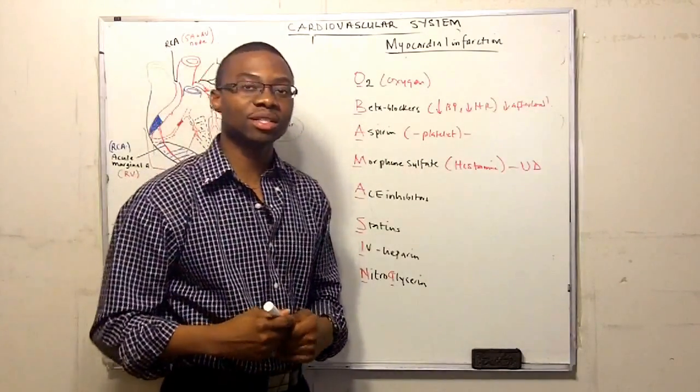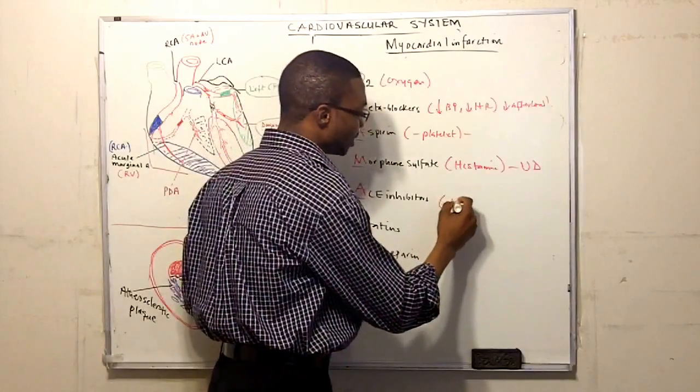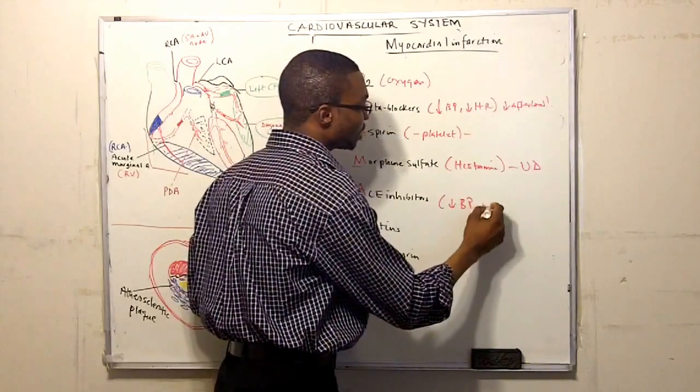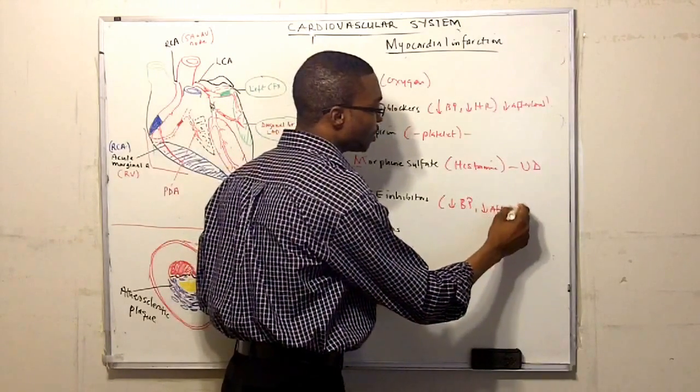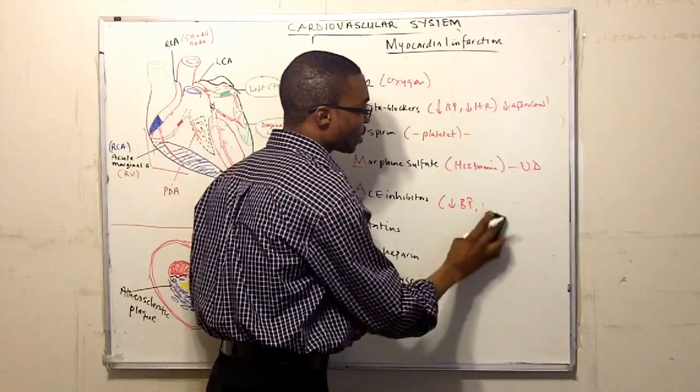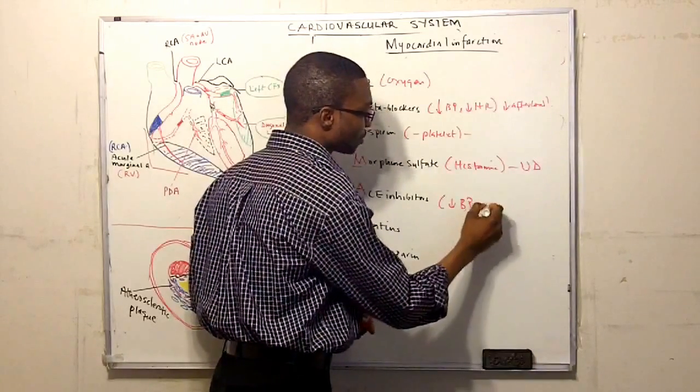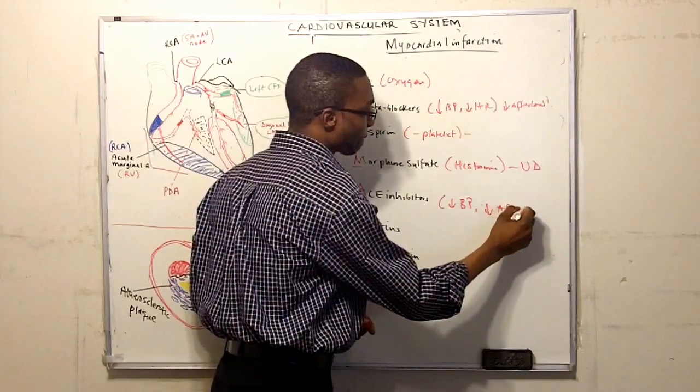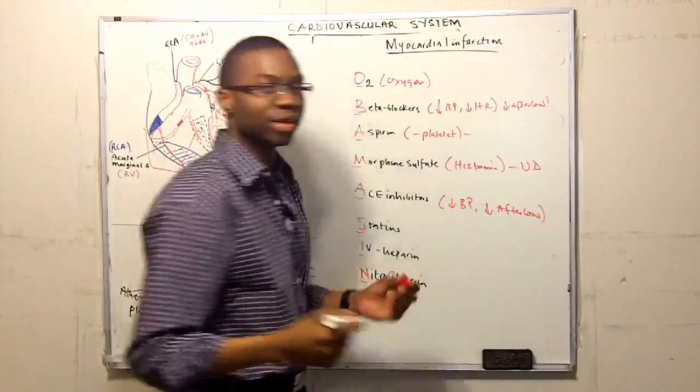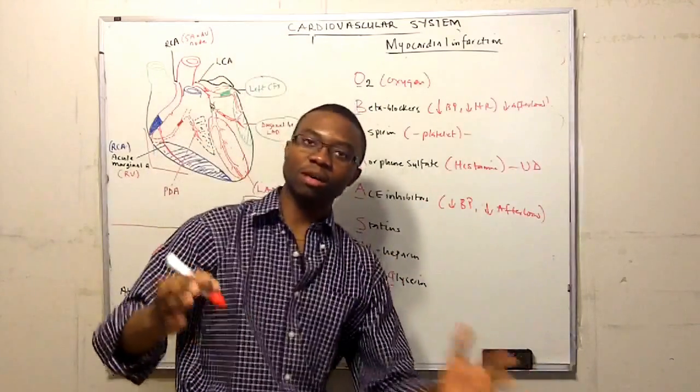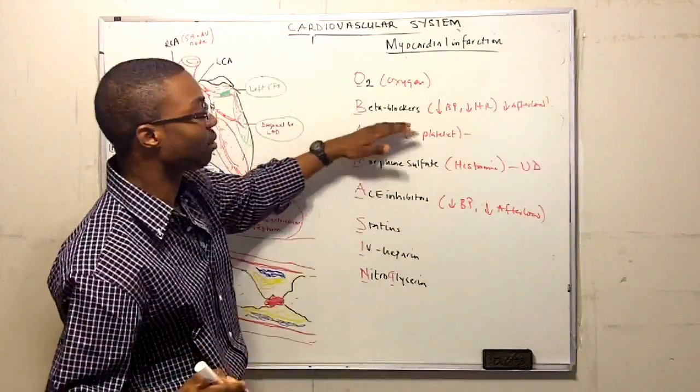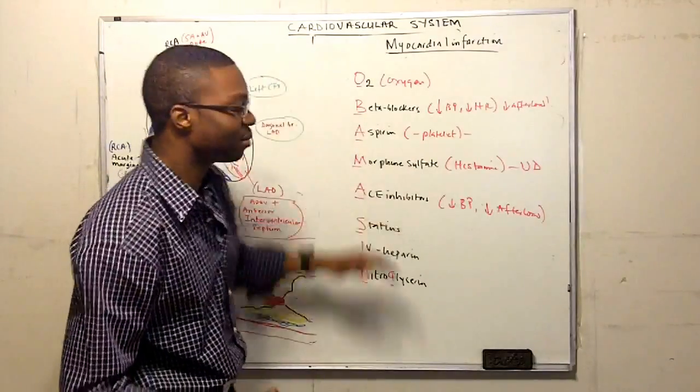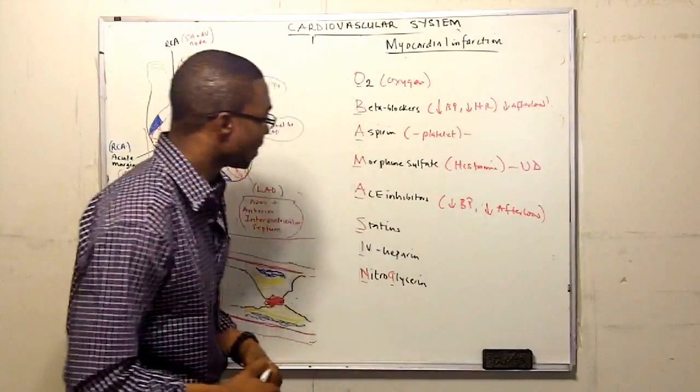You have to put them on ACE inhibitors, because ACE inhibitors is also going to decrease their blood pressure, decrease their afterload. Prevents vasoconstriction over their blood vessels, and also prevents heart remodeling. Carvedilol, it's a good one. Oh, that's actually a beta blocker, so we take that back, ACE inhibitor, lisinopril.